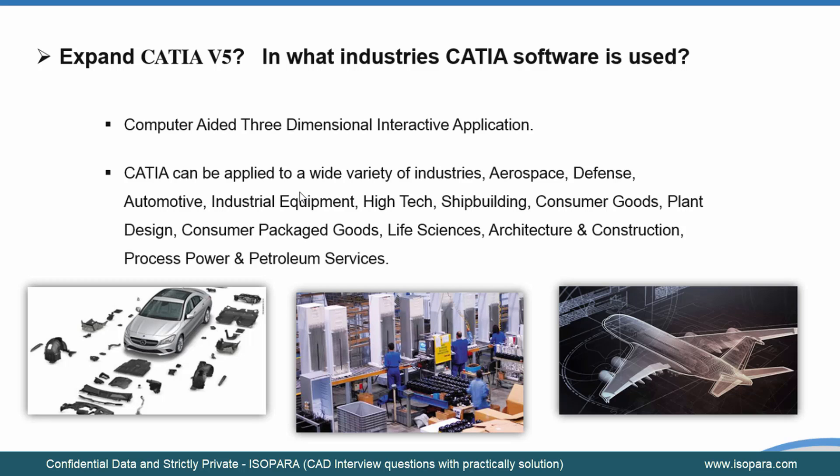CATIA can be applied to a wide variety of industries, including aerospace, defense, automotive, industrial equipment, high-tech industry such as electronics components, shipbuilding, consumer goods, plant design, consumer packaged goods, life science, architecture and construction, and process power and petroleum services.